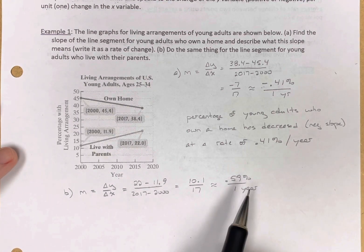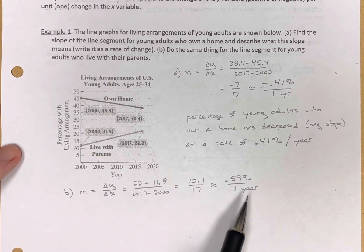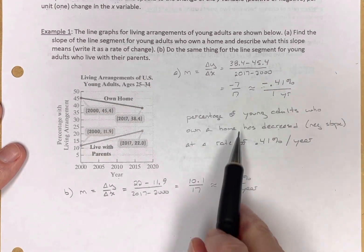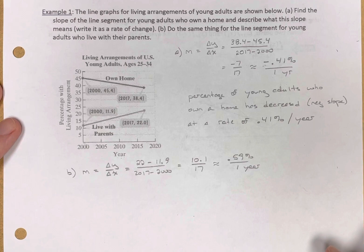So here's the slope written as a rate of change written per one. Okay, so now let's do the same thing. Let's write what this means that we would say to someone.